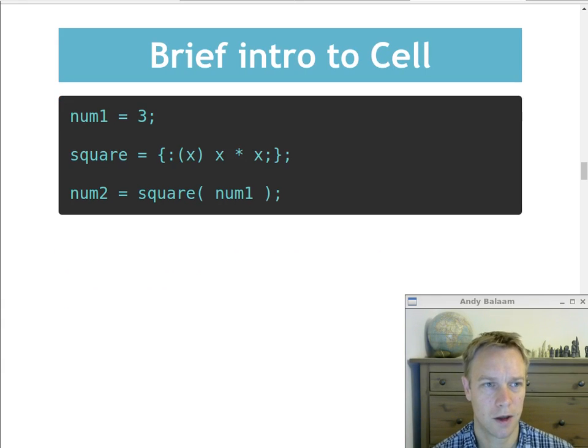So here are some more examples of what we can do. Basically the same kind of stuff, creating a variable called num1 and then creating a function called square which does X times X, where X is its input, its argument. And then you can call a function in a sort of Python-like style.